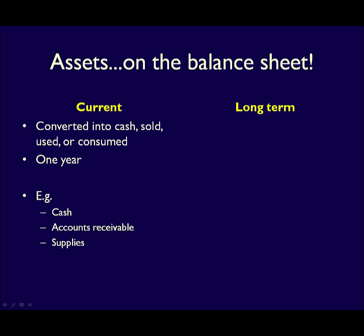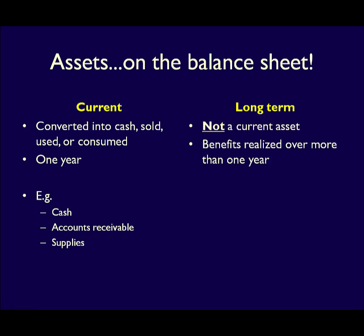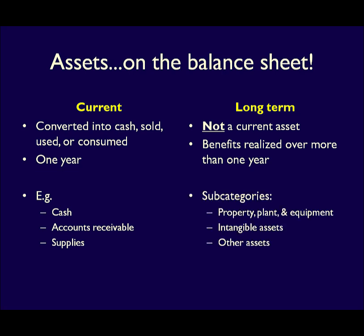If an asset does not meet the definition of a current asset, it belongs in one of the other subcategories that are long-term. These are resources that will be converted into cash, sold, used, or consumed over more than one year. Anything that is not current must belong in one of the other subcategories: property plant and equipment, intangible assets, or other assets.